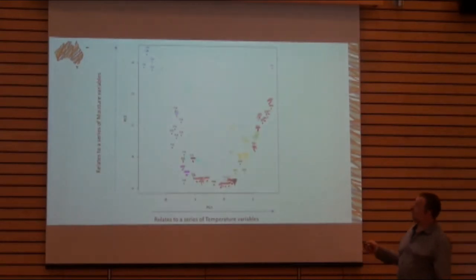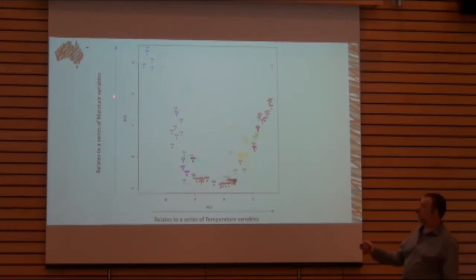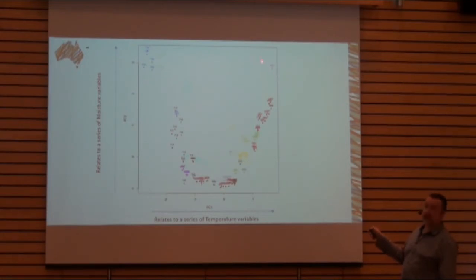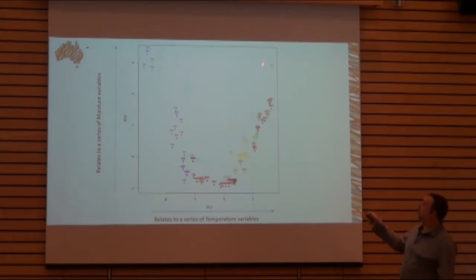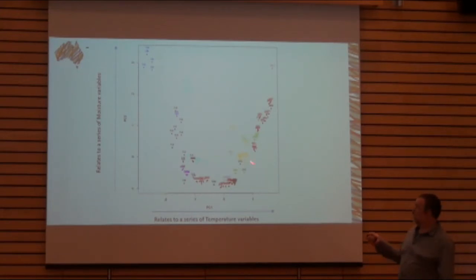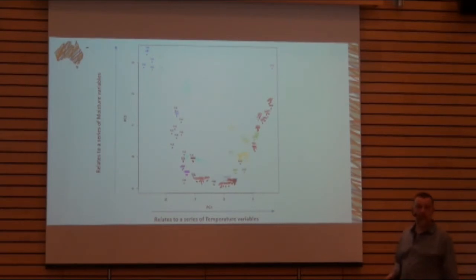This plot shows a principal component analysis of moisture-related and temperature-related variables with all our plots across the country — from our really hot, wet tropical areas through to our coldest and wettest plots down in Tasmania, and a lot of arid areas through the centre of the country, as is characteristic of Australia.